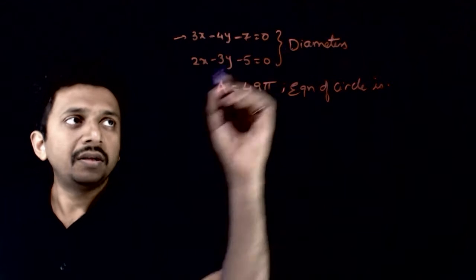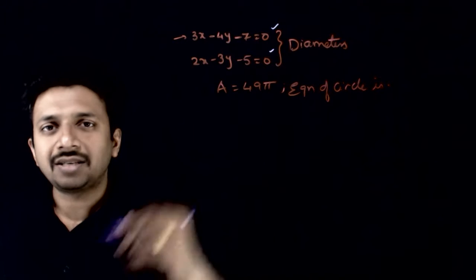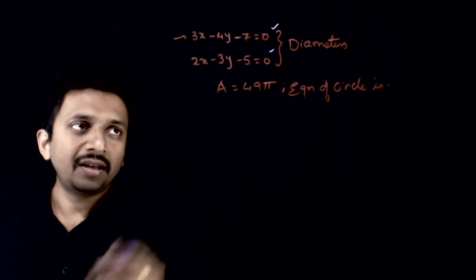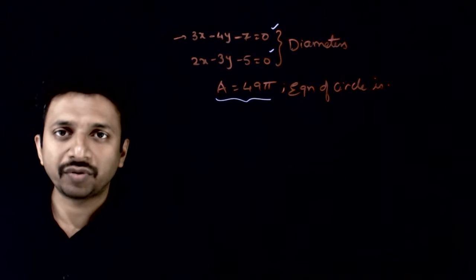Welcome students. In this question, we are given that these two lines represent two diameters of a circle and the area of the circle is 49π. What is the equation of the circle?